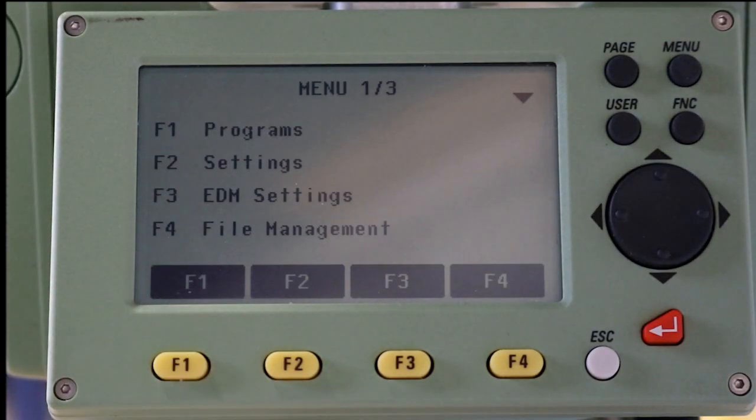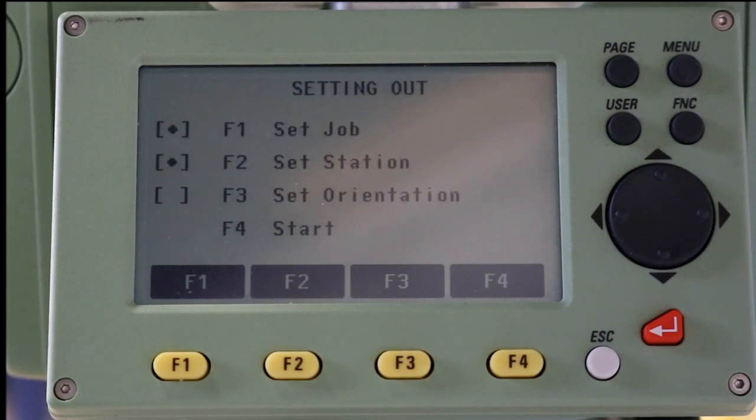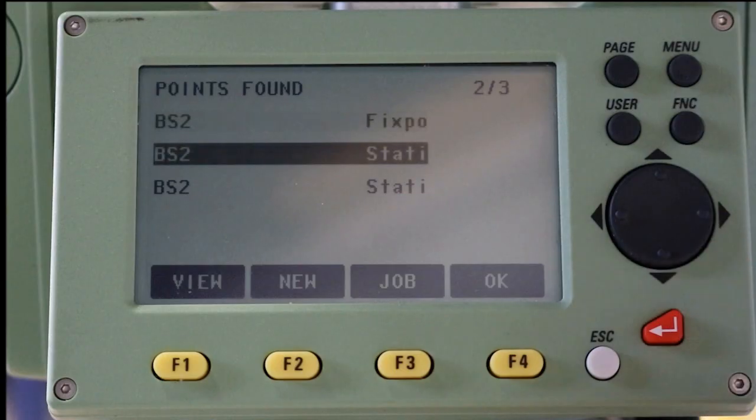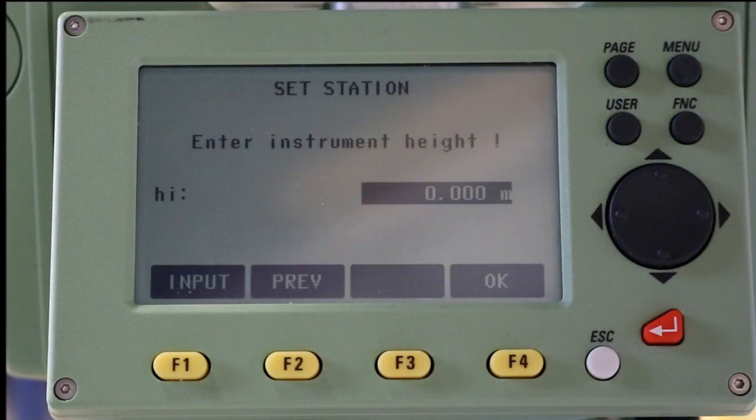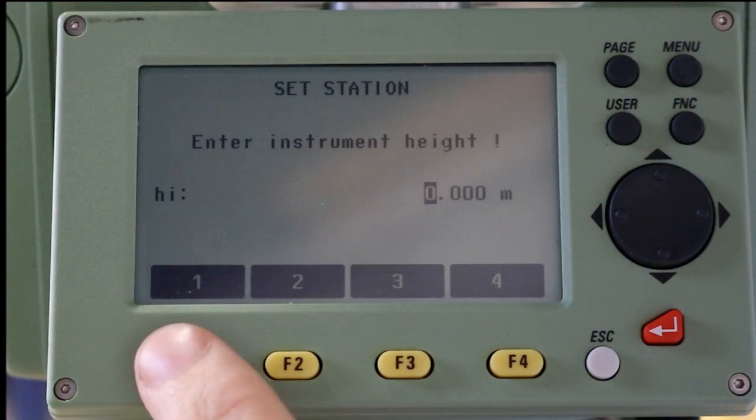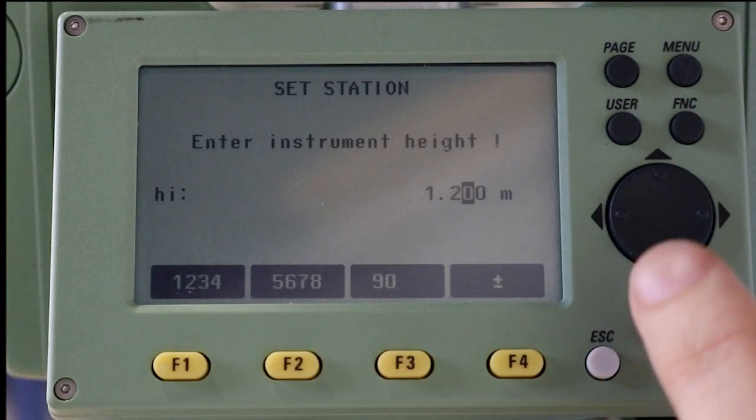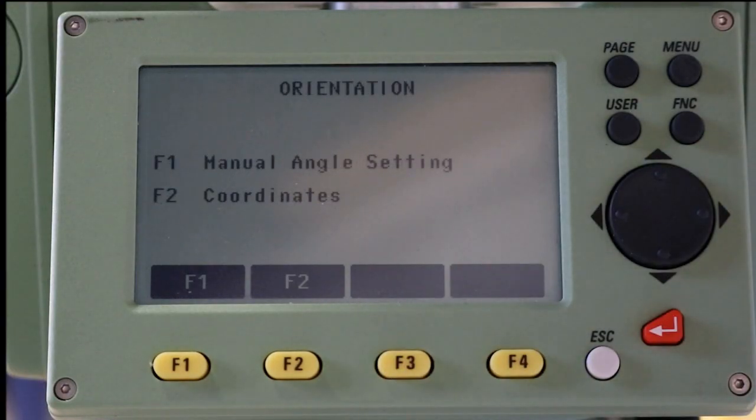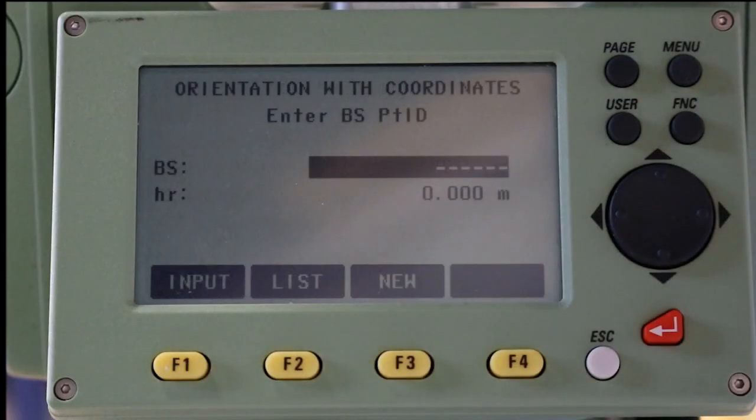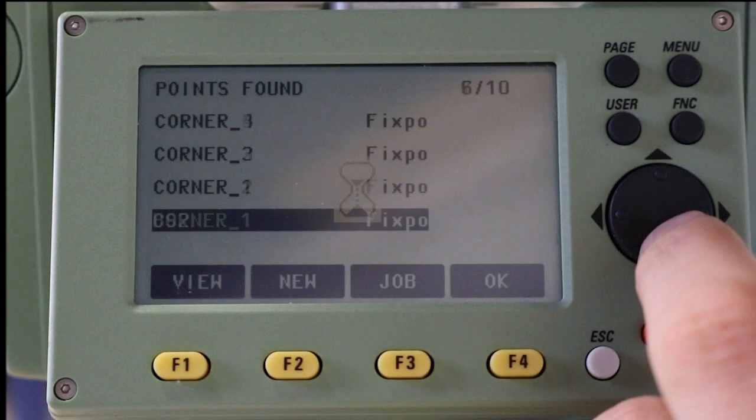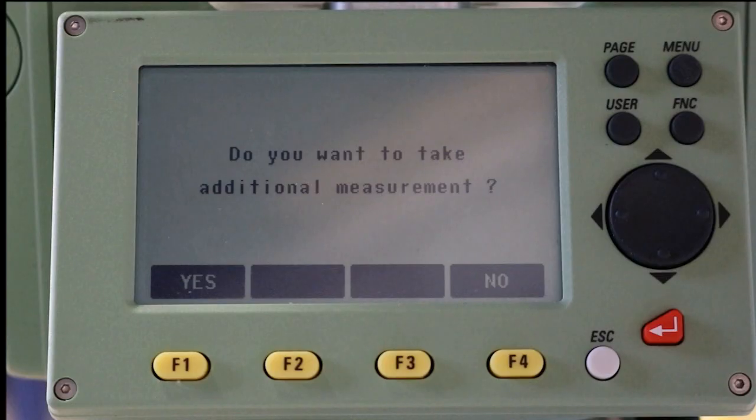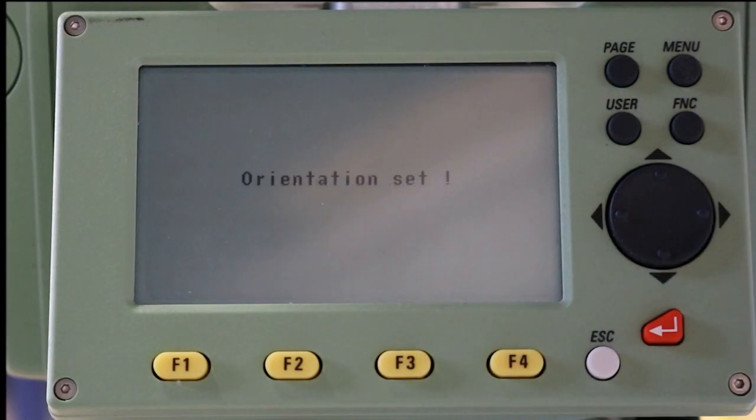If setting up over a known point, we use the following method. We enter the setting out mode and then press F2 to set station. Select the saved data corresponding with the point over which the total station is located and enter the height difference between the marker and the center of the eyepiece, which is marked by an engraved dot at the side of the instrument. We now need to set the orientation of the total station. To do this, we use coordinates of another backside. The total station uses this data to determine which direction it is looking in and uses this line, the one between the total station location and the backside location, as a reference line for the setting out of coordinates later on. Using this recorded data, we can set the orientation of the total station and then proceed to the setting out.